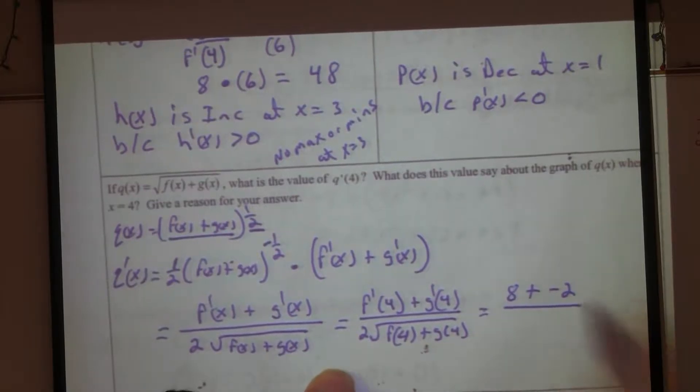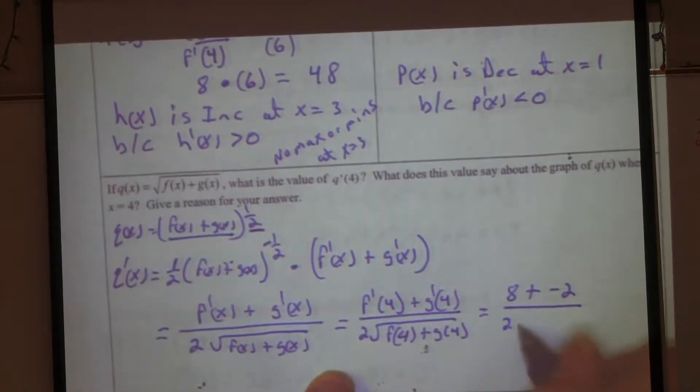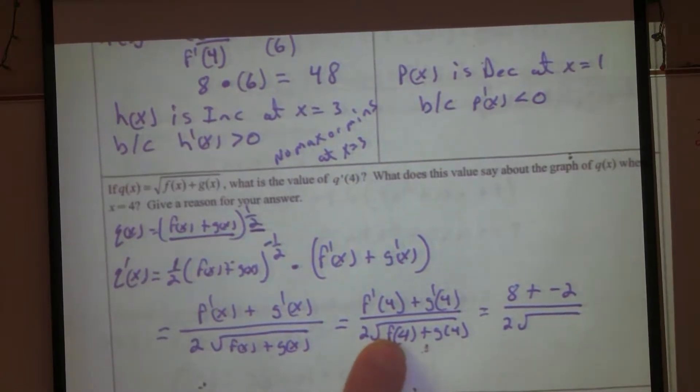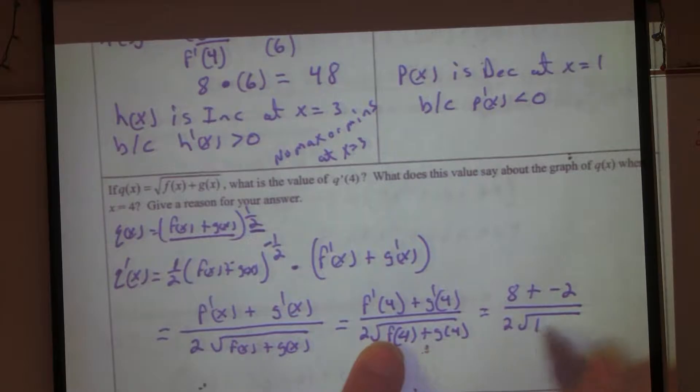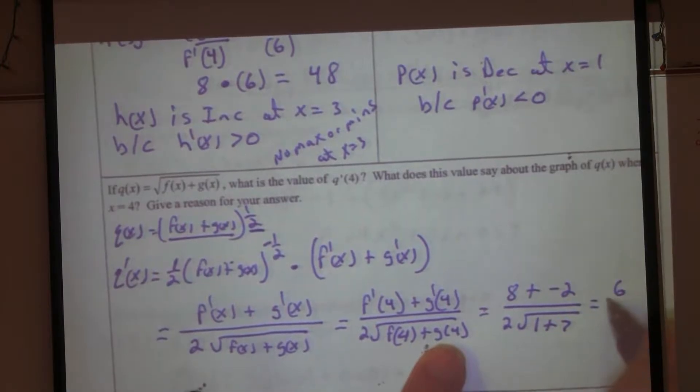You want to be very careful when you're looking at your table and you're picking the right stuff. 2 times the square root of f of 4. 1 plus g of 4. 7.